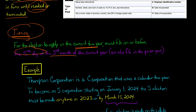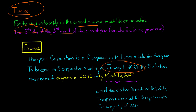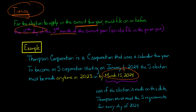Let's do an example. Let's say that Thompson Corporation — they're a C-Corp and a calendar year taxpayer. For them to be an S-Corporation starting on January 1st, 2024, they can make the S-Election anytime in the prior year 2023, or in 2024 on or before March 15th, 2024. So on February 1st of 2024, even though 2024 has already started, they can make an election as of January 1st, 2024 to be an S-Corporation.